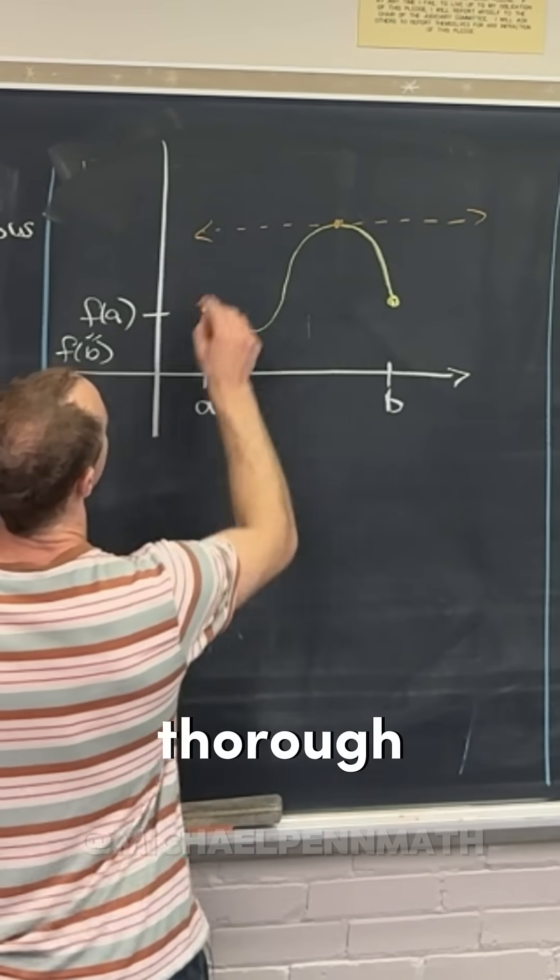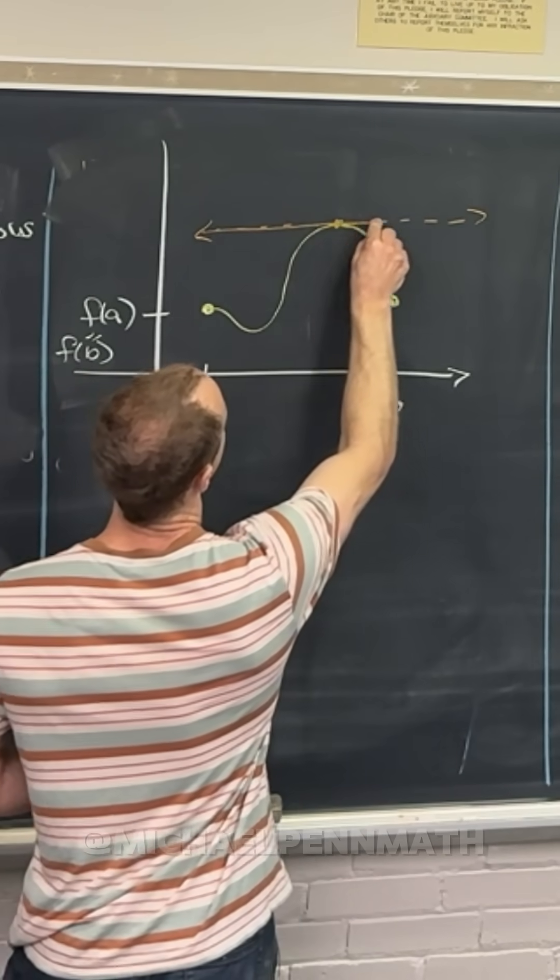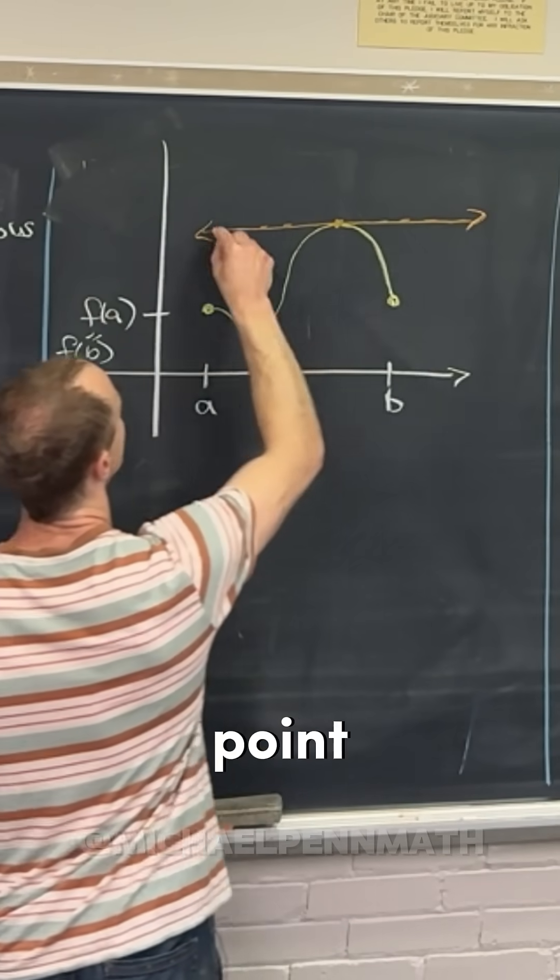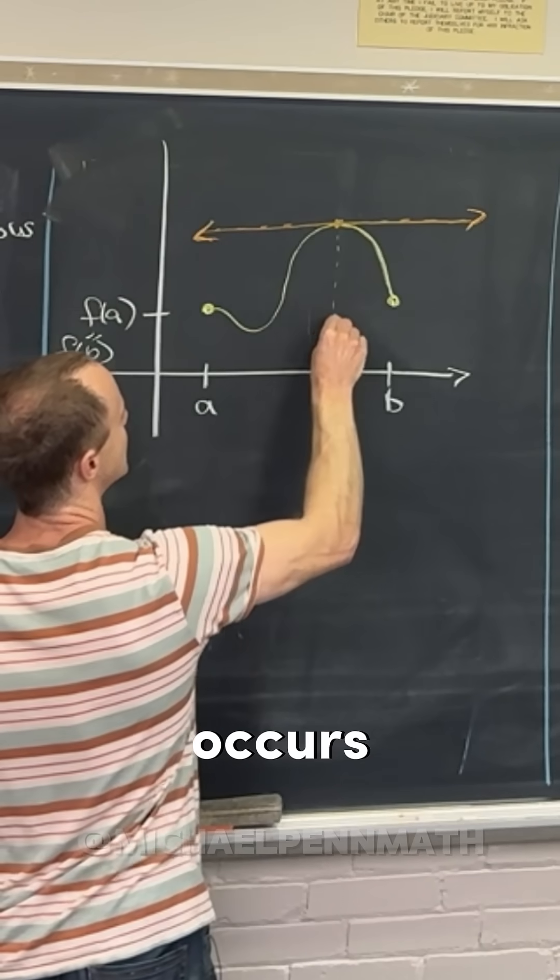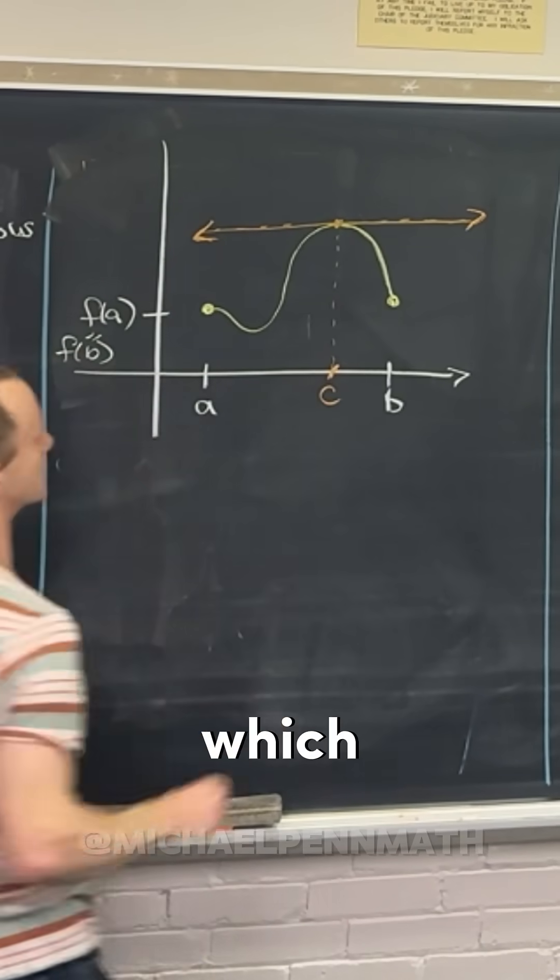And then just to be really thorough here, we can say that this point where this occurs is our point down here, which is called C.